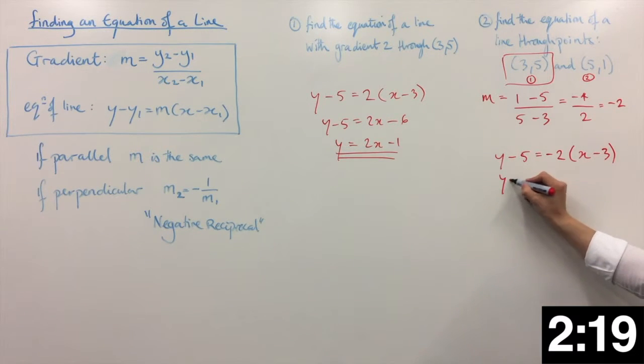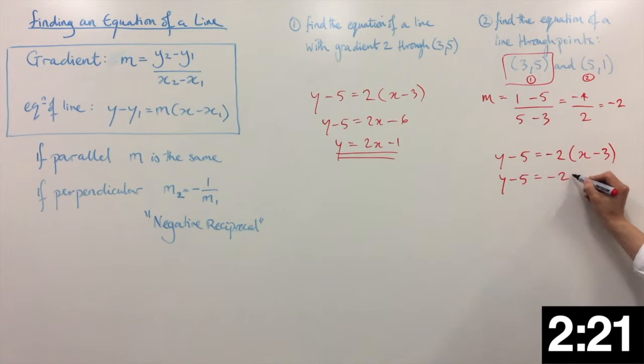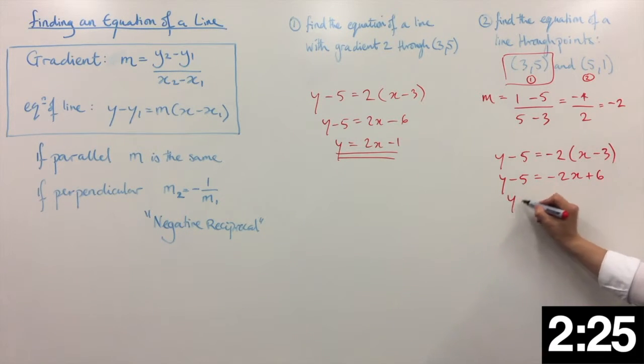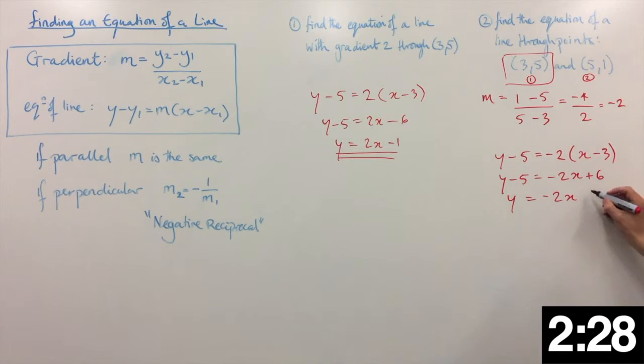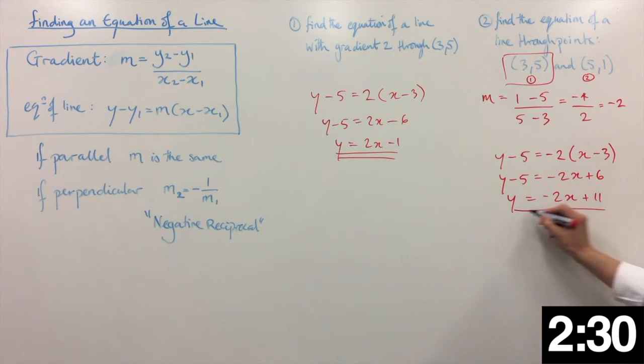And again, we start to tidy this up. Minus 2x, minus minus plus, 2 times 3 is 6. Okay, y equals minus 2x. We add the 5, giving us y equals minus 2x plus 11. Okay, there you have it.